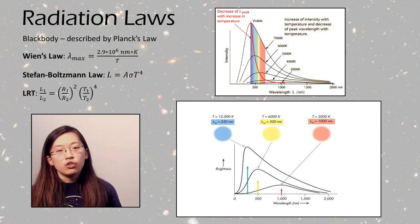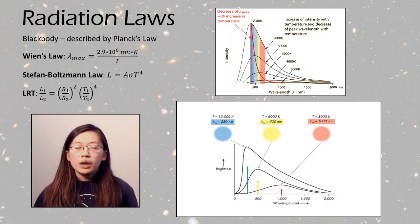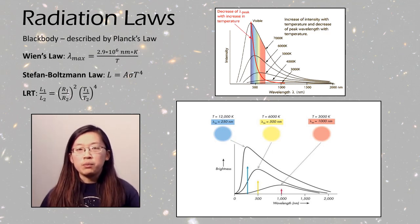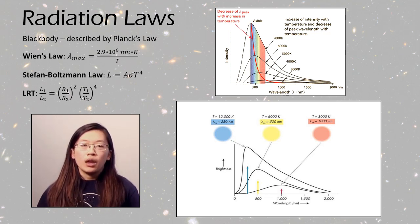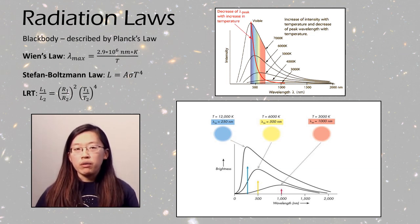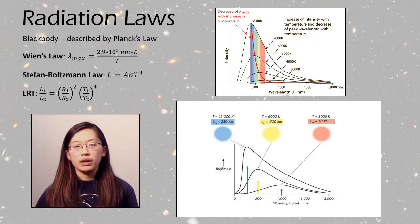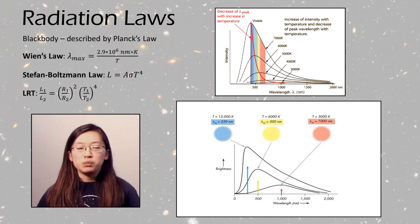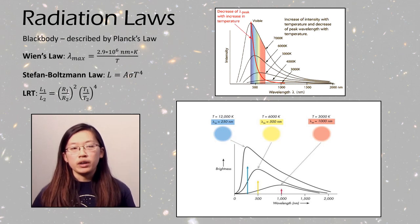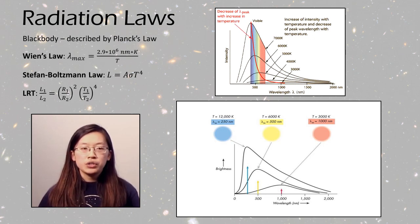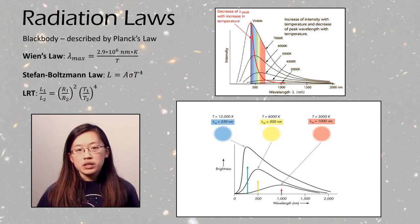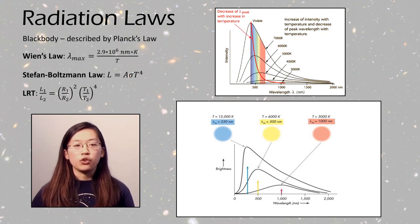Our next topic would be radiation laws. So many objects in space radiate as black bodies, so these are described by something called Planck's law. And based on this, there's Wien's law, which lets you find the wavelength at which the maximum amount of light is emitted, and the Stefan Boltzmann law, which lets you find the total amount of light that's emitted over all wavelengths. And for stars, there's often a very handy relationship between the total luminosity and the radius and the temperature, which is called LRT.